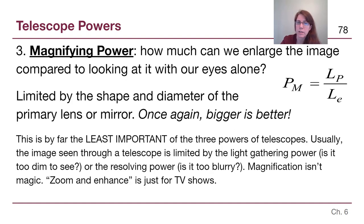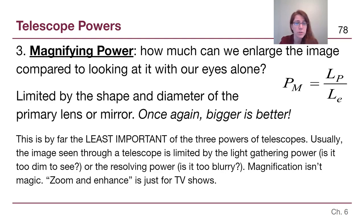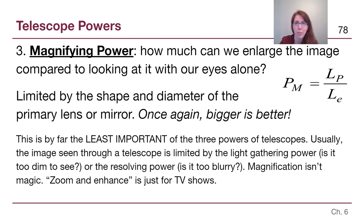The third power is that a telescope can enlarge an image so we can see it bigger than our eyes would. This is limited by the shape and diameter of both the primary lens or mirror and the eyepiece. However, this is the least important of the three powers, because if you have a dim or blurry image, zooming in won't help — just like TV shows that magically enhance two pixels into a readable license plate. That's movie magic. Magnifying power is kind of useless without good light gathering and resolution.